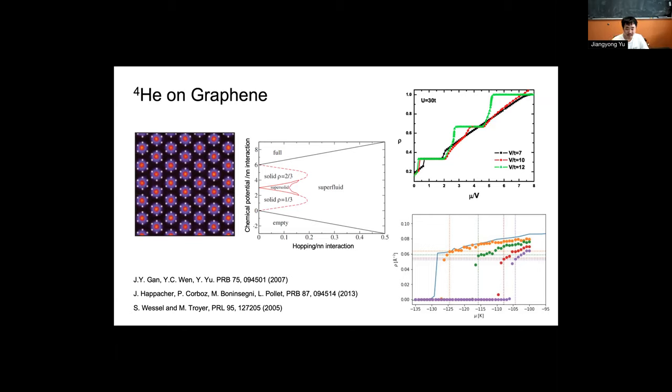If we now look at the phase diagram of this system, we can see that for a certain chemical potential, we have a solid one third filling phase.